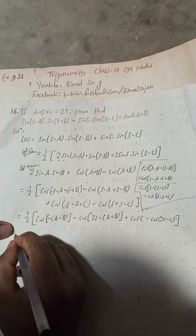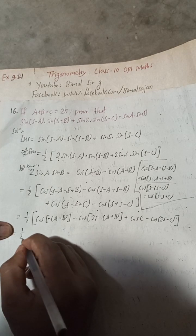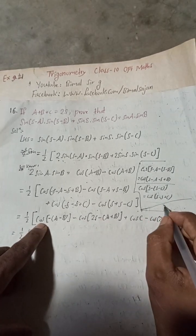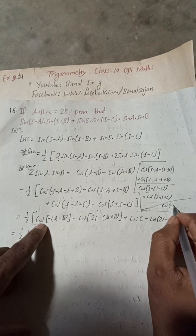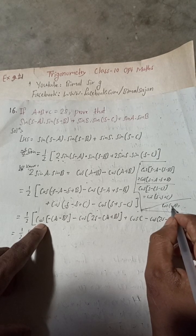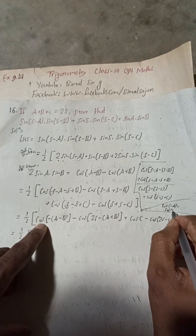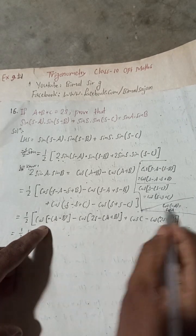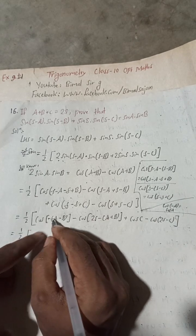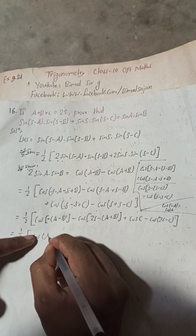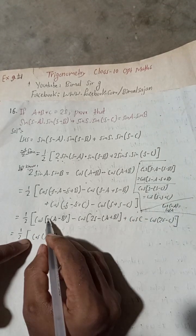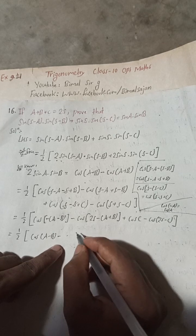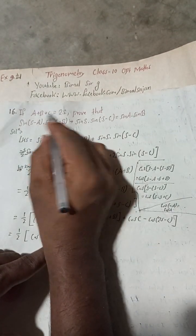Now, the formula cos(−a) = cos(+a) for cosine (unlike sine where sin(−a) = −sin(a)), so the minus inside cosine vanishes and we get the same result. This gives us 1/2 times the expression. Now, 2s = a + b + c, so we substitute that in.